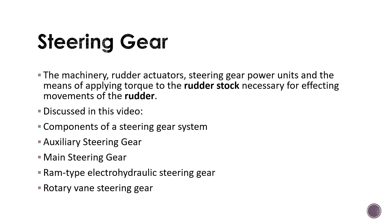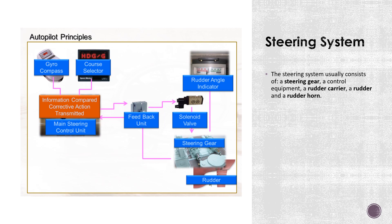Before going into the different types of steering gear, I will talk about the components of a steering gear system — what is the main steering gear and the auxiliary steering gear — and then the types of steering gear systems, which comprise the ram type electro-hydraulic steering gear and the rotary vane steering gear, along with pictures and notes for your examination.